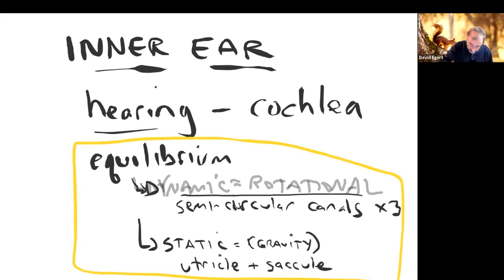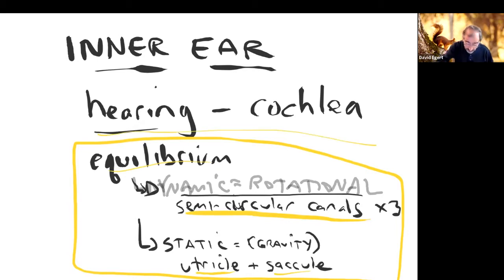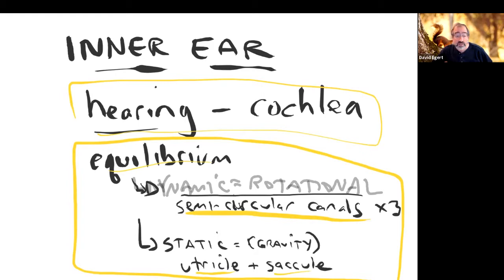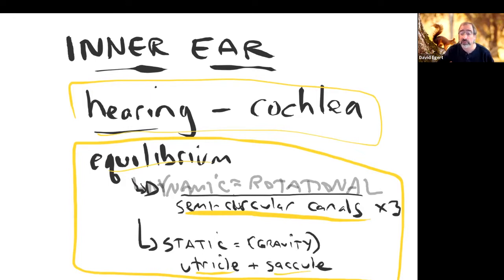The semicircular canals, the utricle, and the saccule handle equilibrium, and we'll look at those as well as hearing with the cochlea. At the core of all of this there has to be some kind of transduction — a conversion of vibrations or rotations into an electrical signal — and that's done with a special cell called the hair cell.